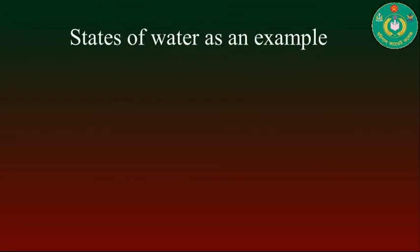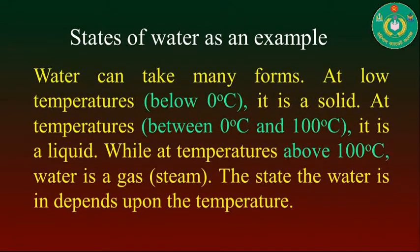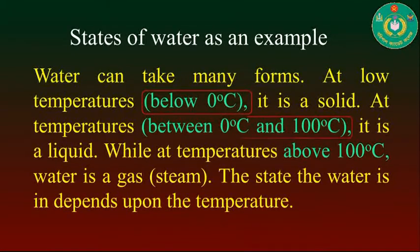For example, consider the states of water. At very low temperatures, nearly 0°C, it is a solid. At temperatures between 0°C and 100°C, it is in a liquid state. Where the temperature rises above 100°C, water is a gas or steam. So, below 0°C it is solid, between 0°C and 100°C it is liquid, and above 100°C it is gaseous.